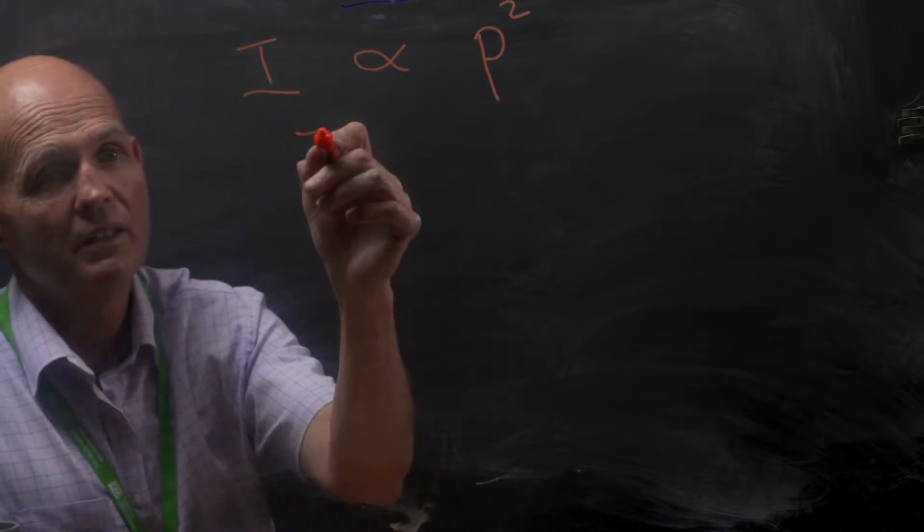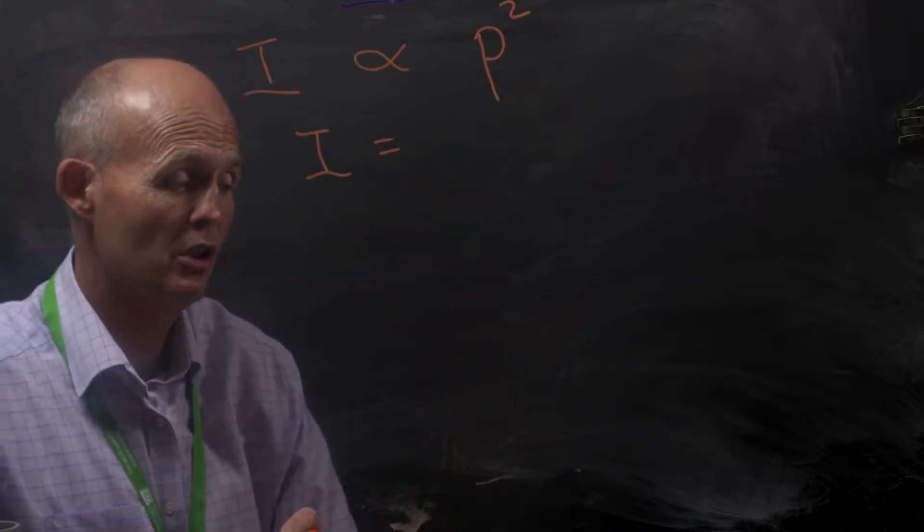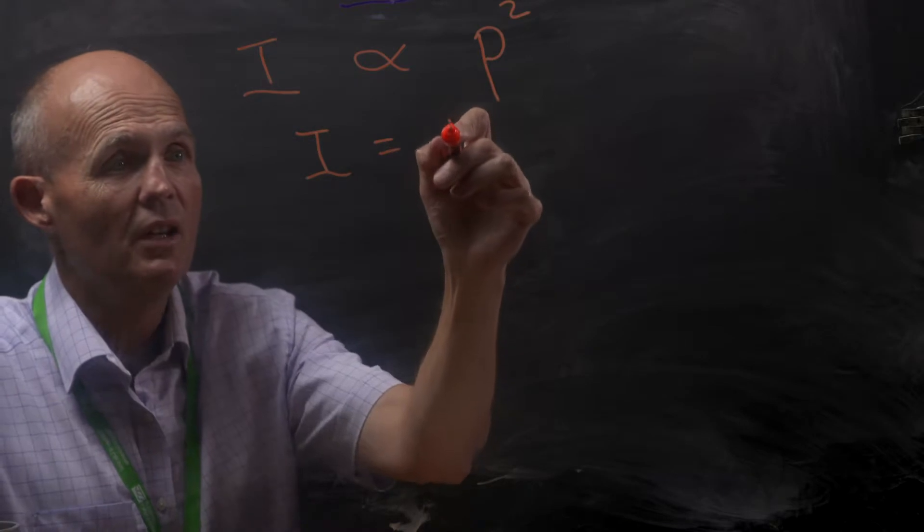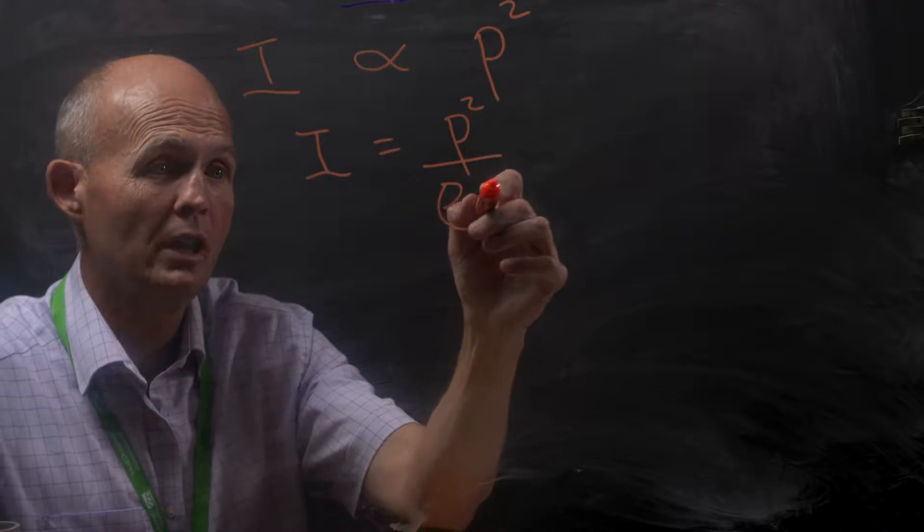And there is a relationship between intensity and pressure in terms of equality. The intensity is equal to the pressure squared divided by a parameter called rho times c.